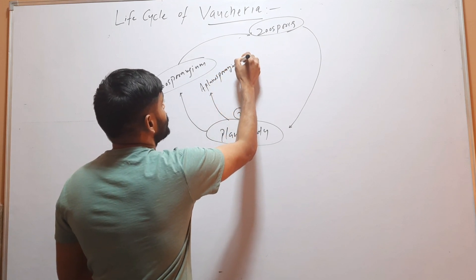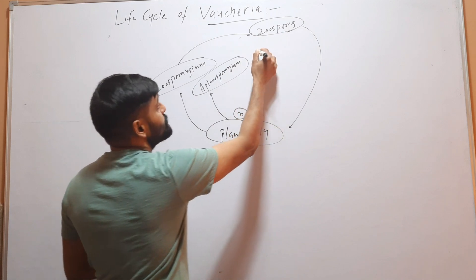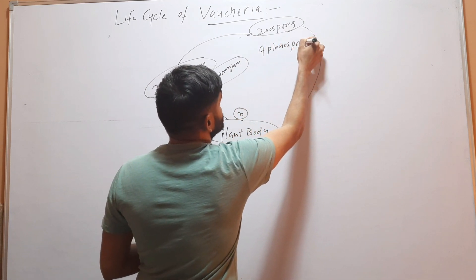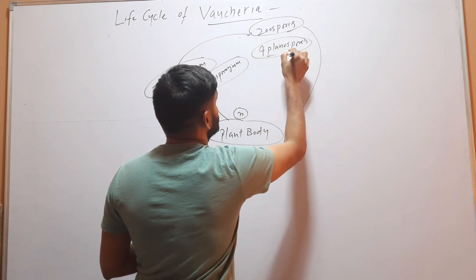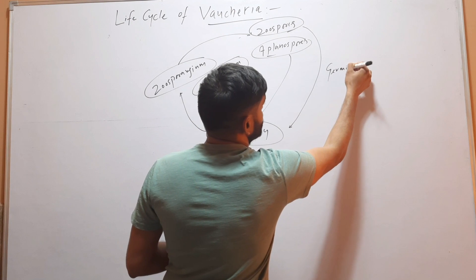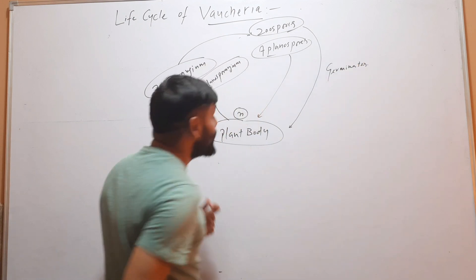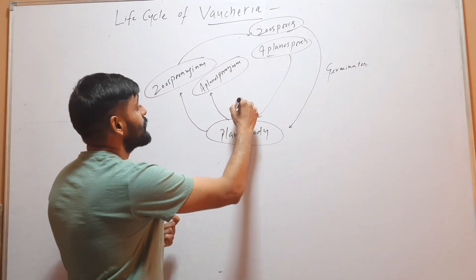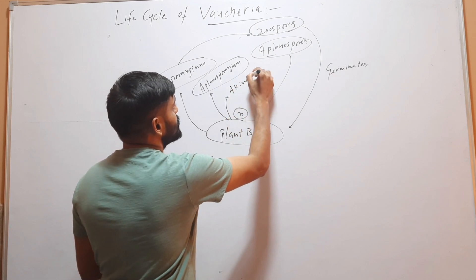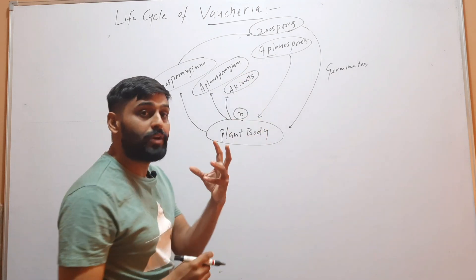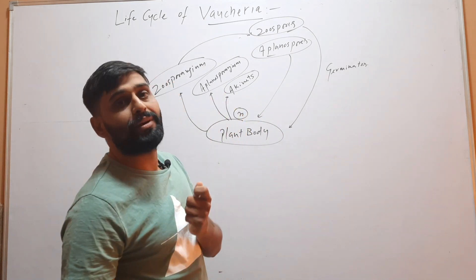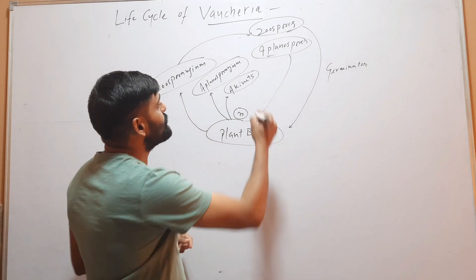The second type of asexual reproduction occurs through aplanospores. These are formed in aplanosporangia. The aplanosporangia form aplanospores, and these aplanospores germinate and form the plant body.